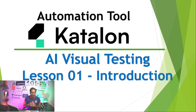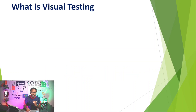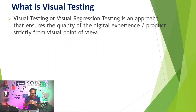This is lesson 43 of the overall Katalon automation tutorial series, and lesson one on AI visual testing using Katalon Studio and TestOps integration. Let us first understand what visual testing is. Visual testing, or visual regression testing, is an approach that ensures the quality of the digital experience and product quickly from a visual point of view.